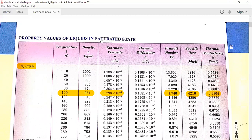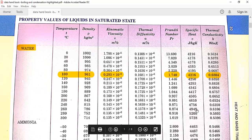Go to the property values table — in my book it is page number 30. Go to the water section. For water at 100 degree centigrade, note down the density ρl = 961 kg/m³, then kinematic viscosity — multiply by ρ to get dynamic viscosity μl. Also note down the Prandtl number Pr, specific heat Cl, and thermal conductivity kl of the liquid.